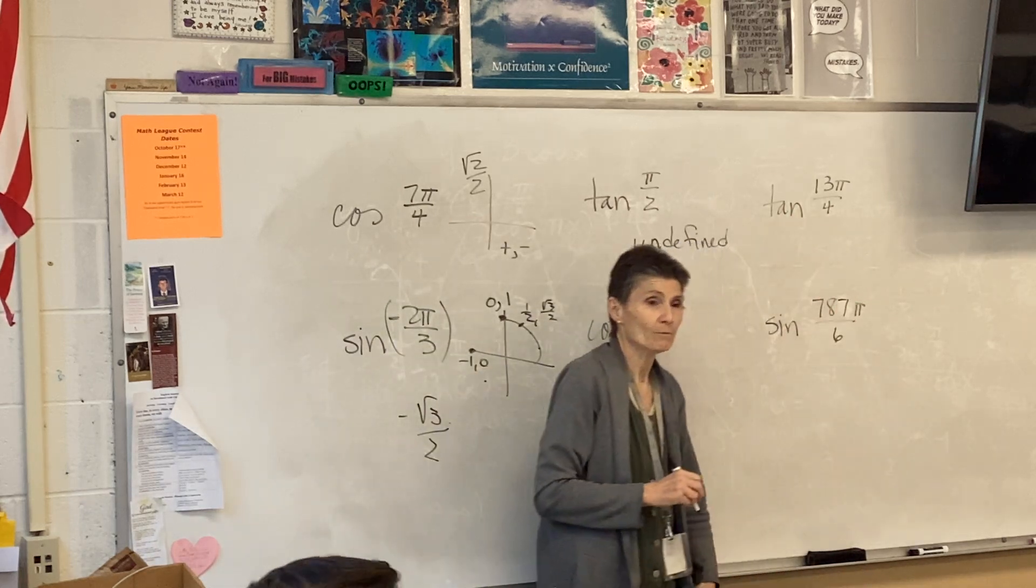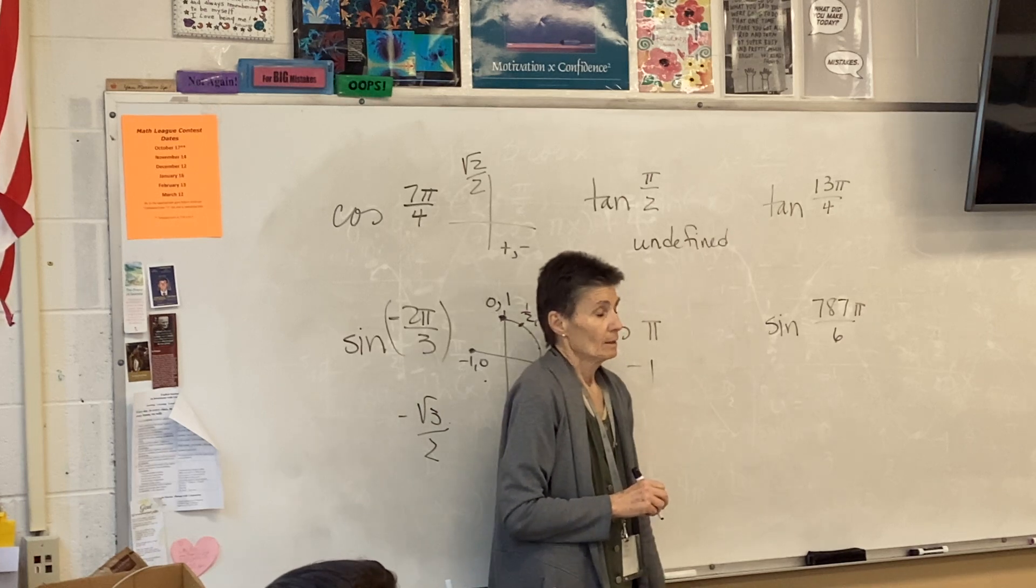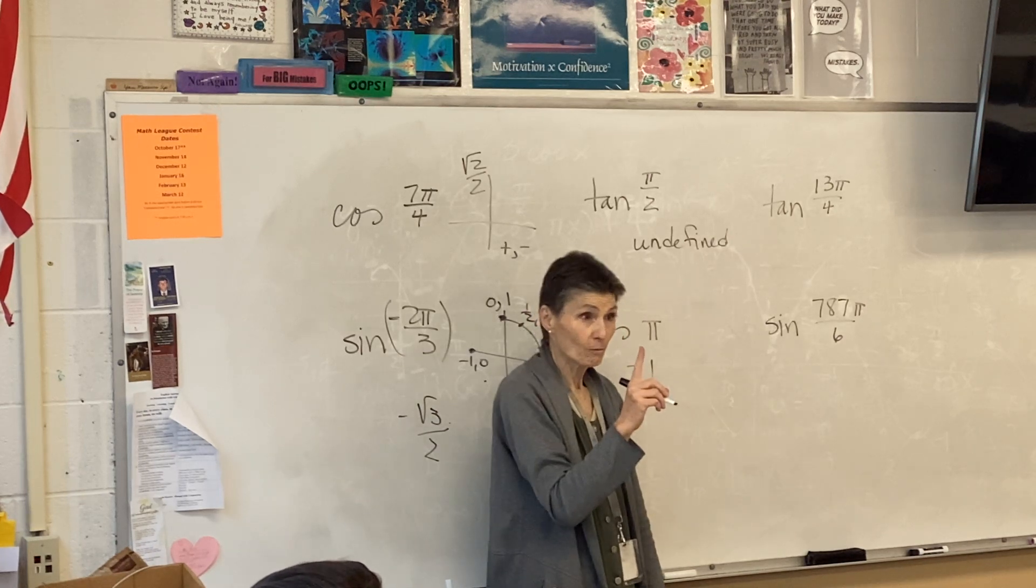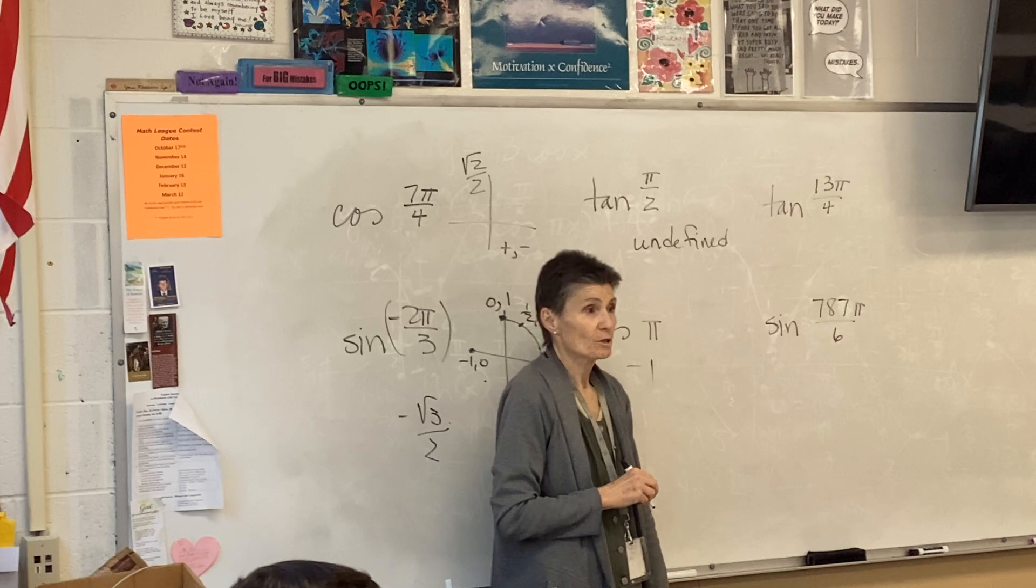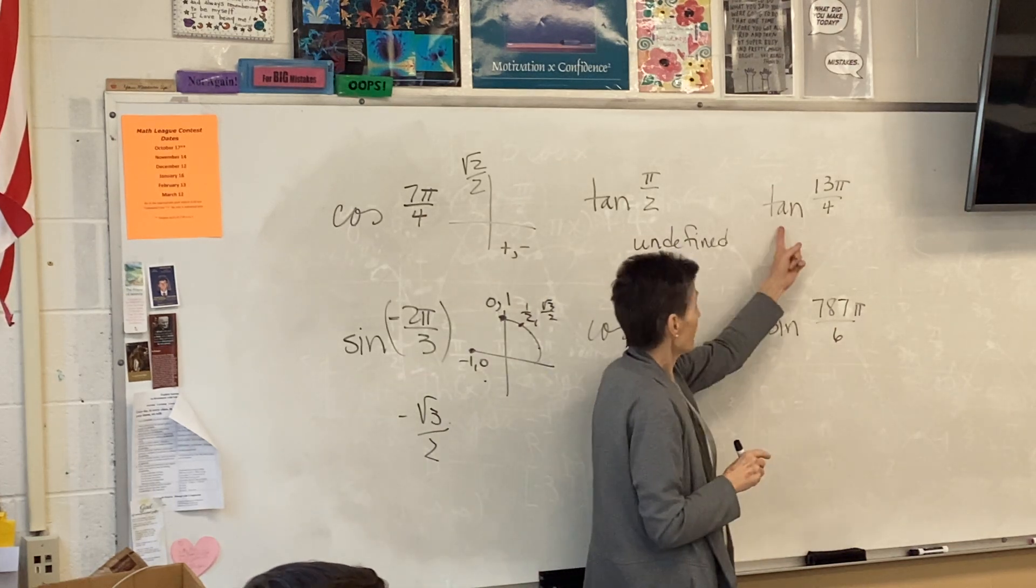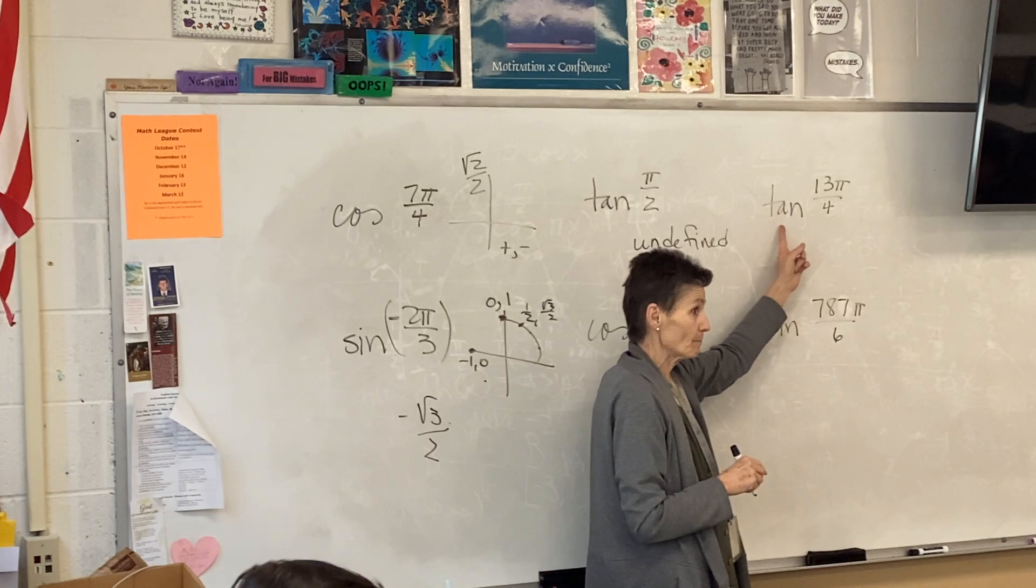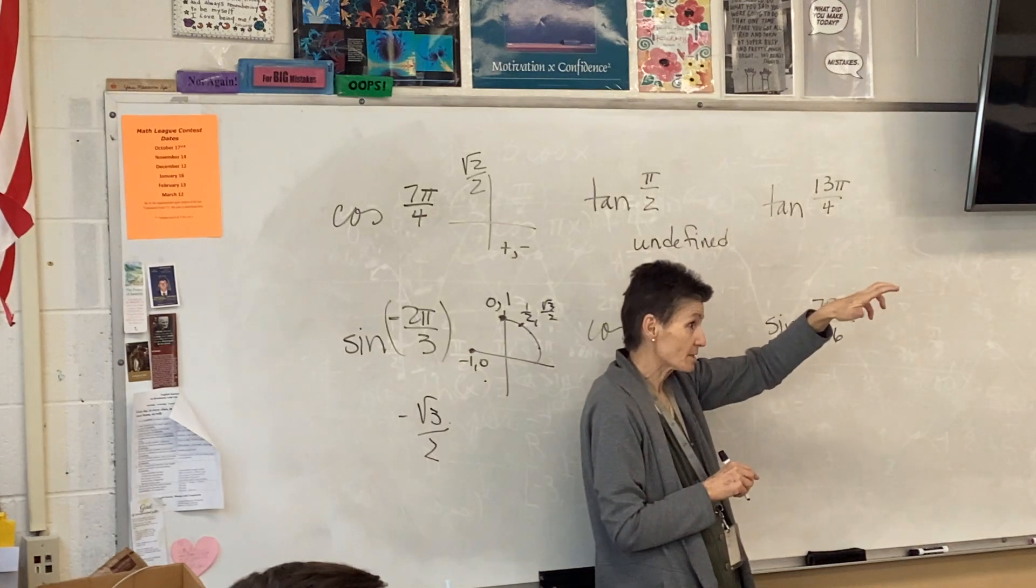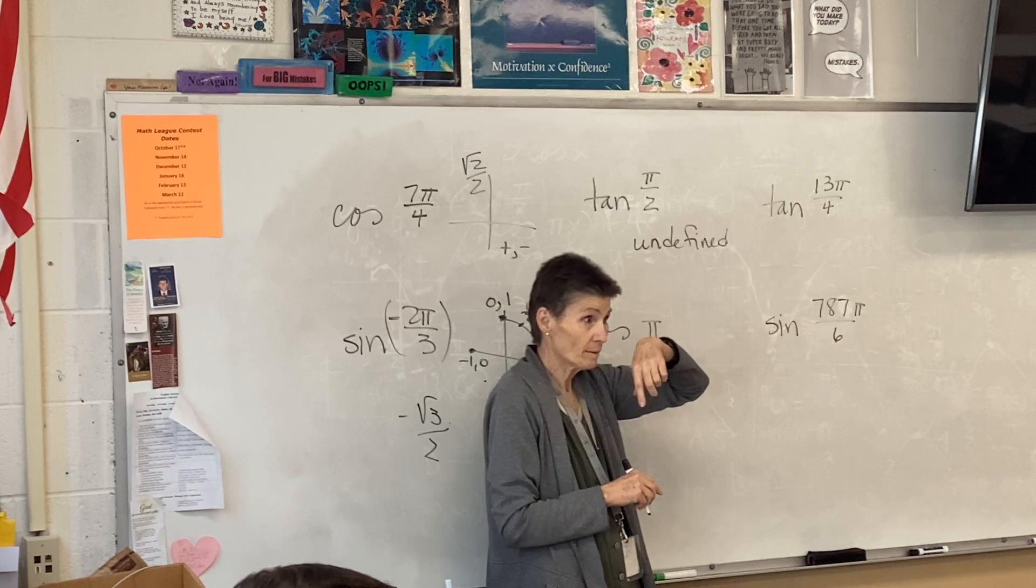13π over 4. Well, it's a π over 4. Which means it's √2 over 2, √2 over 2. And when I make the tangent, put y over x, it's going to be 1 or negative 1.